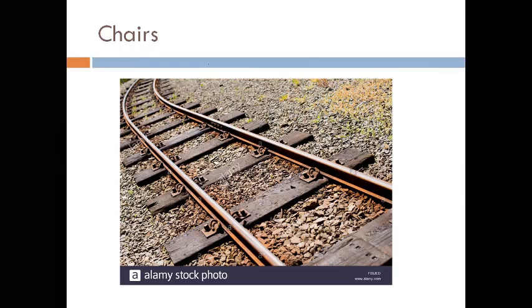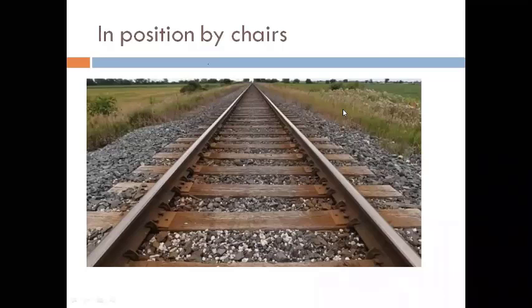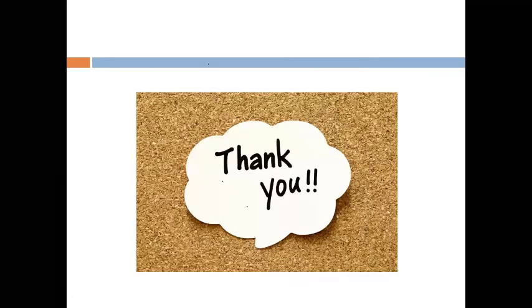Next are chairs. Chairs are the fixtures and fastenings required to fix the rail over the sleepers on the railway track. These components — visible in the figure — are the chairs used for fixing rails to sleepers.